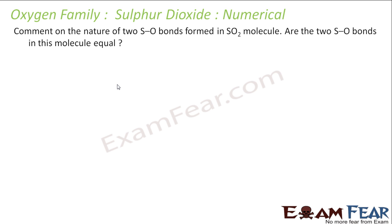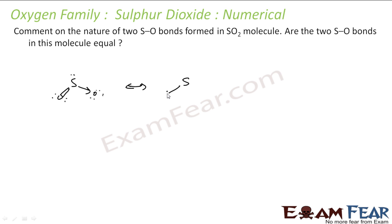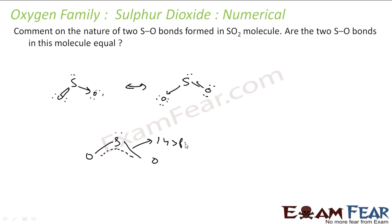Comment on the nature of the S–O bond in SO2. Are the two bonds equal? Yes — they are equivalent because the molecule exists in resonance, as seen from the Lewis dot structure. In the combined resonance structure, the S–O bond length is 143 picometers and the bond angle is 109.5 degrees.